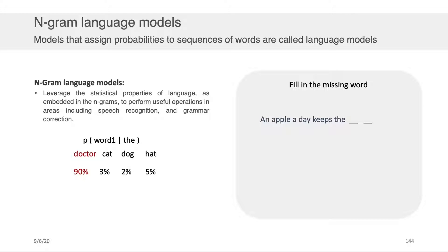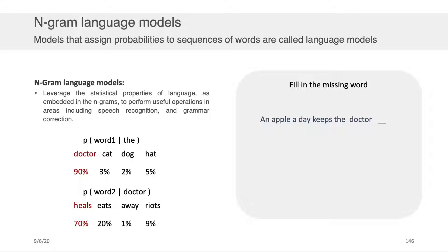What happens if we have two words that are missing — 'An apple a day keeps the blank blank'? We can solve this by chaining the problem together one piece at a time. We say, what's the probability of the first missing word given that I saw the word 'the'? Let's say 'doctor' was the most likely word given 'the,' and I'd fill that in. Then, assuming that word was 'doctor,' what's the probability of the next word being 'heals,' 'eats,' 'aways,' or 'riots'? And we could fill that in. You could do this for an arbitrarily long period of time. If you selected words proportional to their probability, you'd be able to simulate language like a chatbot does.